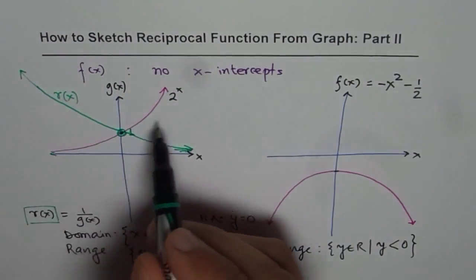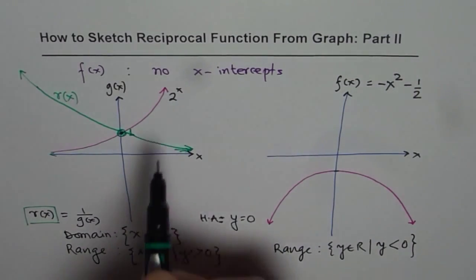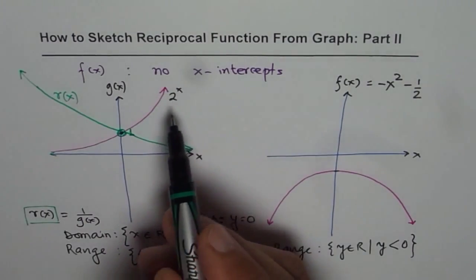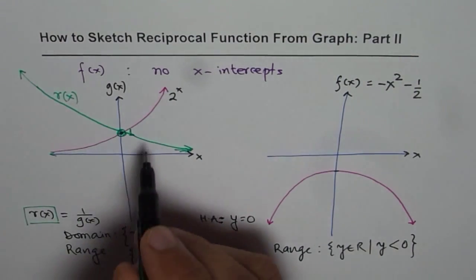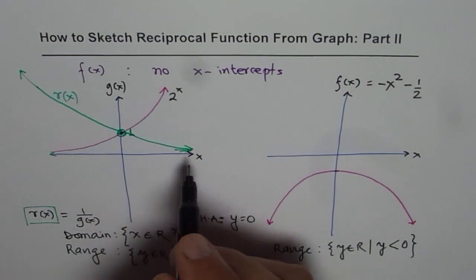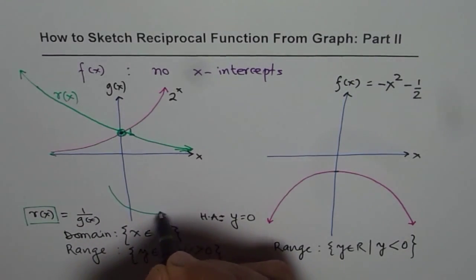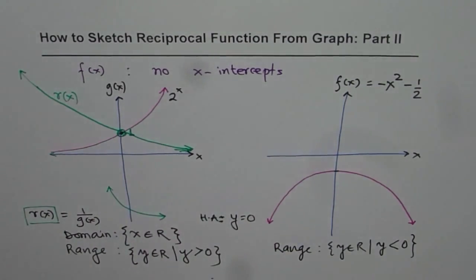So the exponential function with a positive exponent has a reciprocal that, as expected, is a decay function. The reciprocal graph is a decay-type curve, and that is how it is going to be.